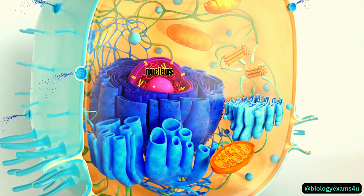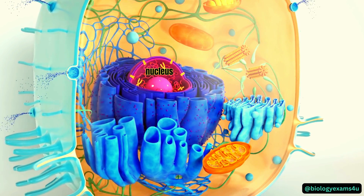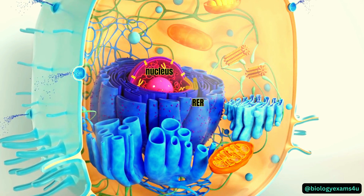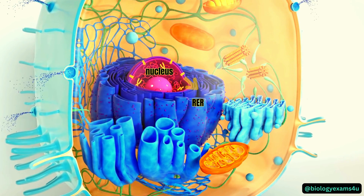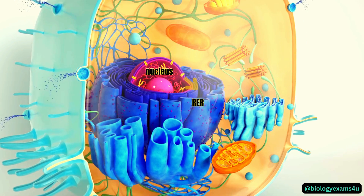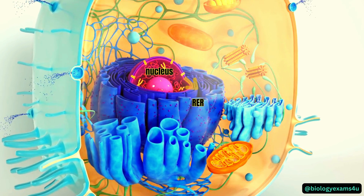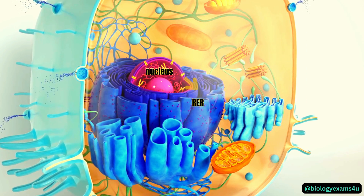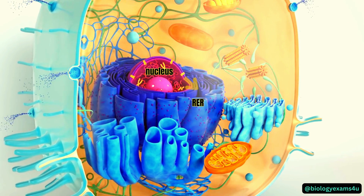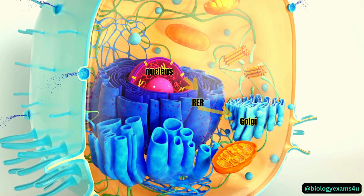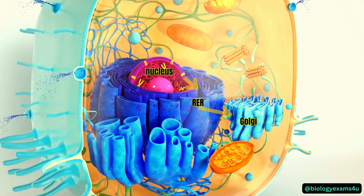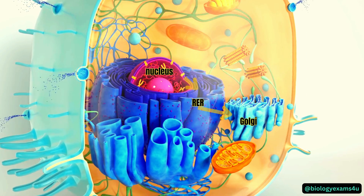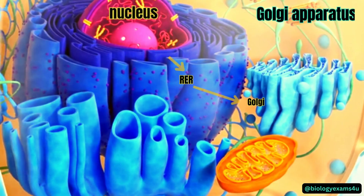The nuclear membrane is in continuous connection with the rough endoplasmic reticulum. RNA that moves out from the nuclear membrane is translated either by ribosomes in the cytoplasm or by ribosomes studded on the RER. Proteins in the endoplasmic reticulum are modified and processed by the RER, then transferred to the Golgi apparatus, which is located near the RER. The proteins received from the RER are modified, sorted, and packaged at the Golgi for delivery to targeted destinations.